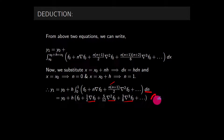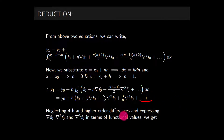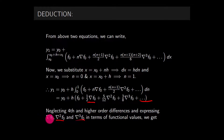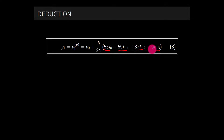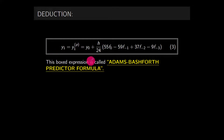Neglecting fourth and higher order terms and substituting the corresponding functional values — using the definition ∇f₀ = f₀ - f₋₁, ∇²f₀, ∇³f₀ — and substituting all these relations, we obtain equation (3): y₁ᴾ = y₀ + h/24 [55f₀ - 59f₋₁ + 37f₋₂ - 9f₋₃]. This formula is known as the Adams-Bashforth predictor formula.